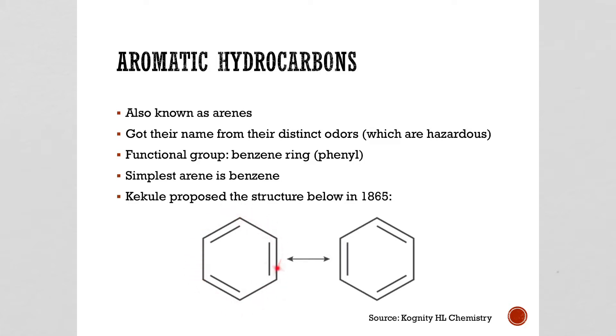His proposal was that you had a six carbon ring with alternating double bonds and then those double bonds could switch positions like so. So these were the two options for benzene.